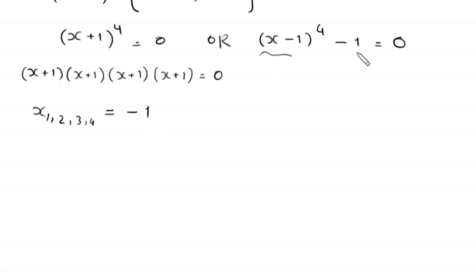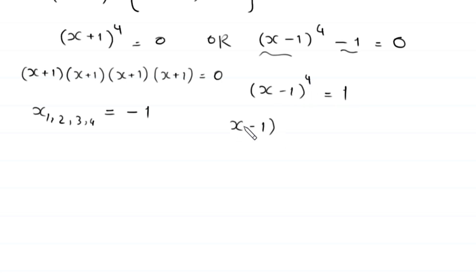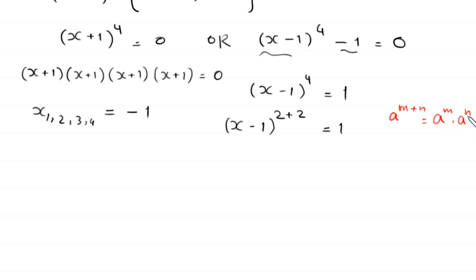From the second equation, we move -1 to the right-hand side to get (x - 1)⁴ = 1. We rewrite the exponent 4 as 2 + 2, so (x - 1)^(2+2) = 1. By the exponent rule aᵐ⁺ⁿ = aᵐ·aⁿ, this becomes (x - 1)² · (x - 1)² = 1.